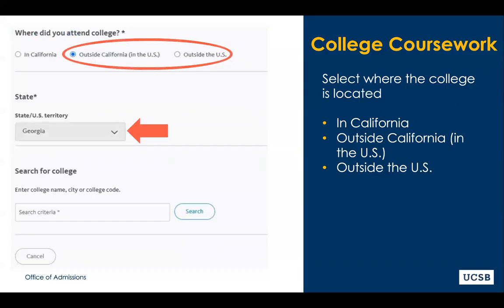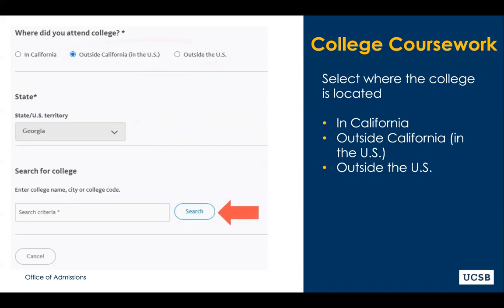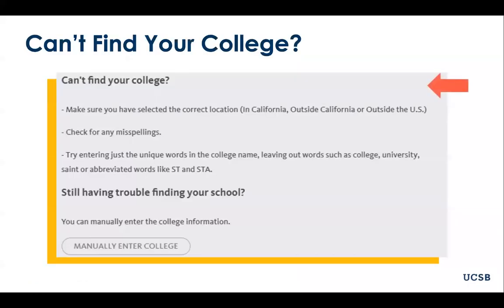However, if the college is located in a different state or country, you will first need to specify which state or country before you are able to search for your school using the search bar. Be sure that you select the correct college in the correct state and city. If you are not able to find your college using the search bar, make sure to follow the suggestions under 'Can't find your college.' This includes making sure your spelling is correct and leaving words like 'college' or 'university' out of your search.